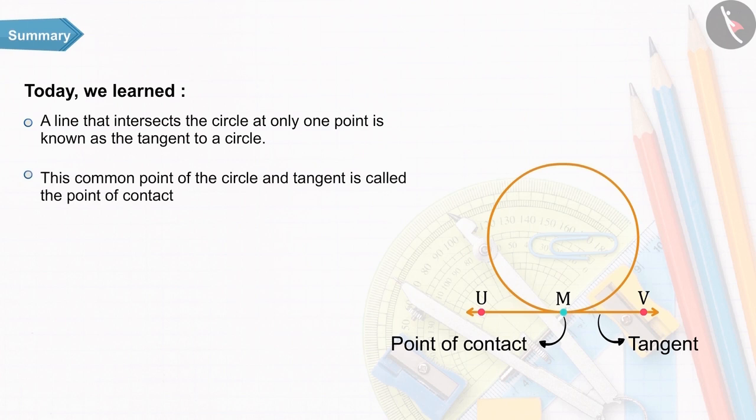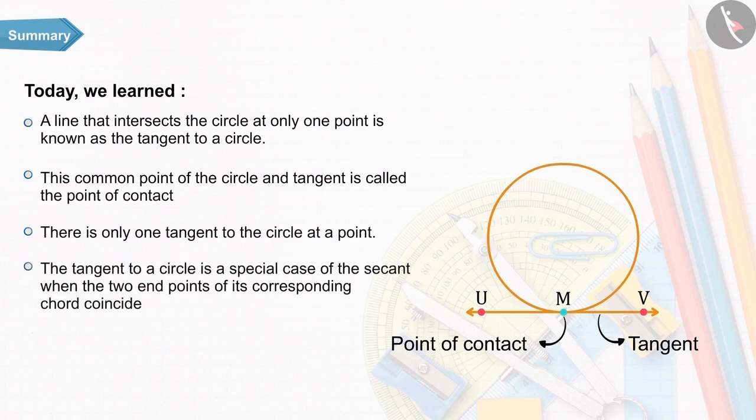The common point of the circle and the tangent is called the point of contact. At a point, there is only one tangent to the circle. The tangent to a circle is a special case of the secant when the two end points of its corresponding chord coincide.